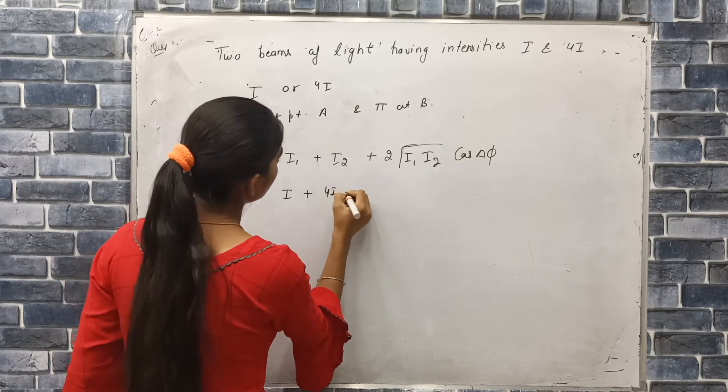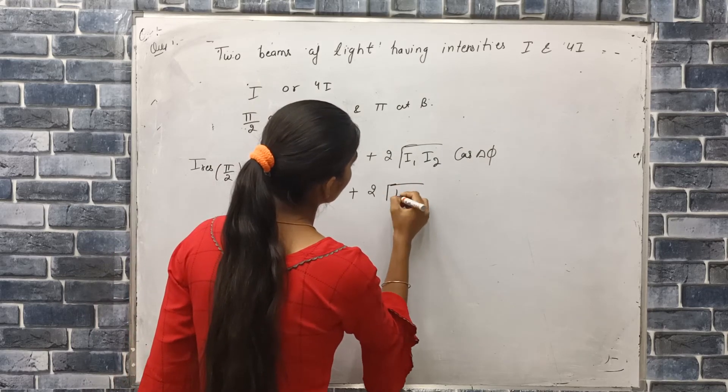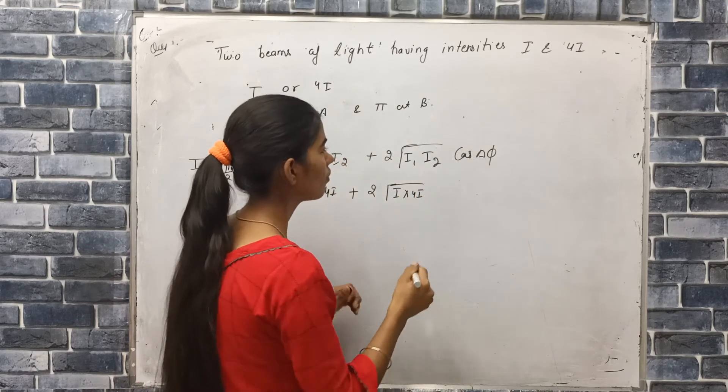So I plus 4I plus 2 root, I1 times I2 means I times 4I, which is 2I cos delta.